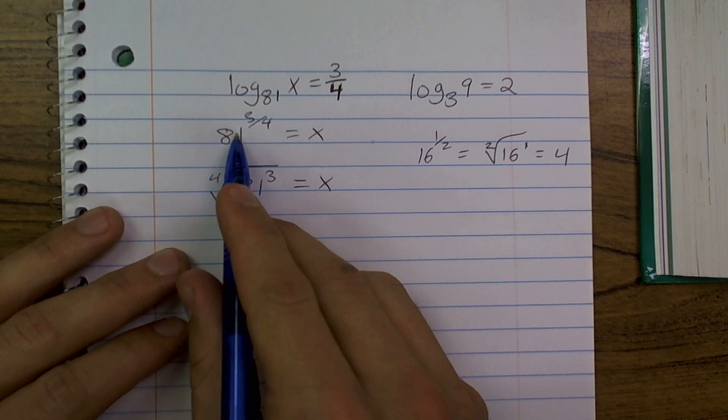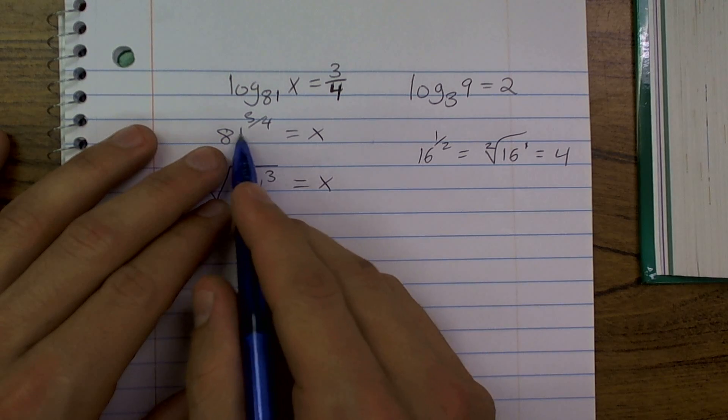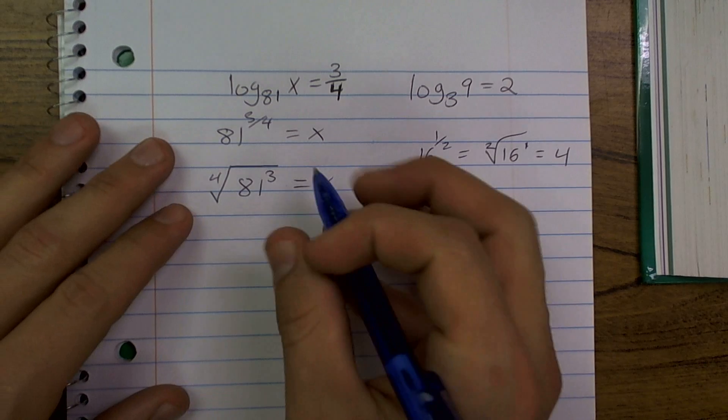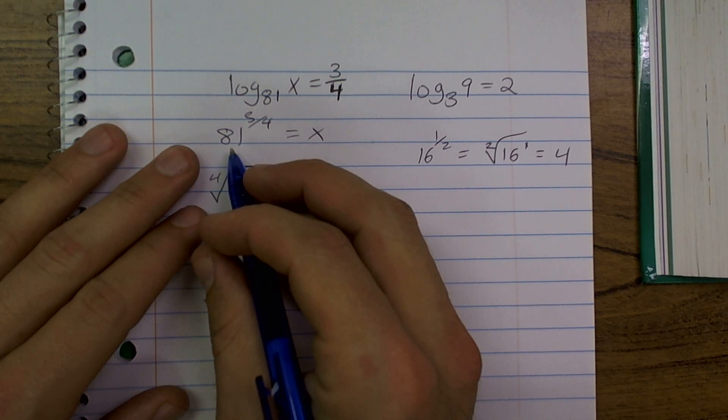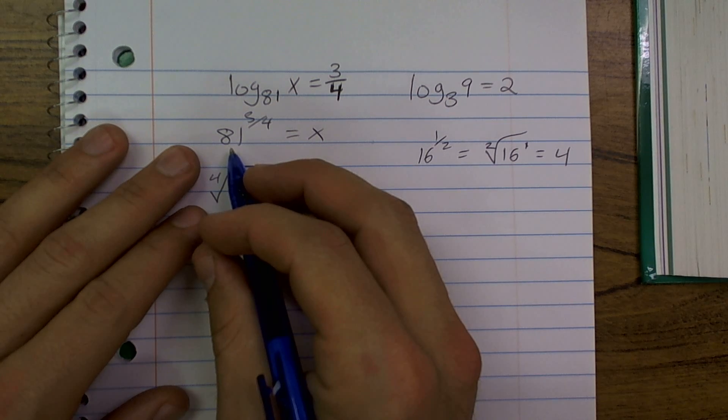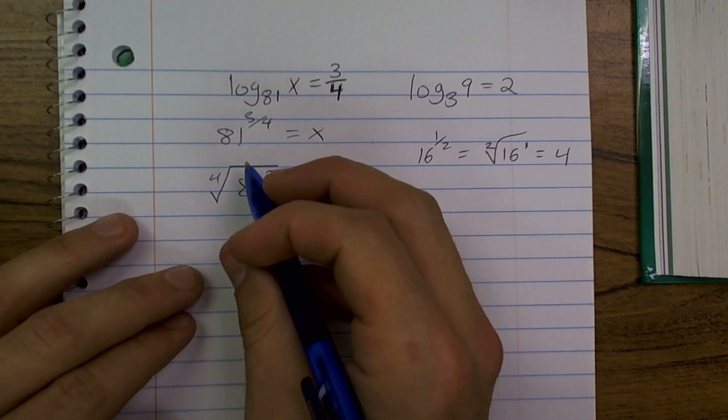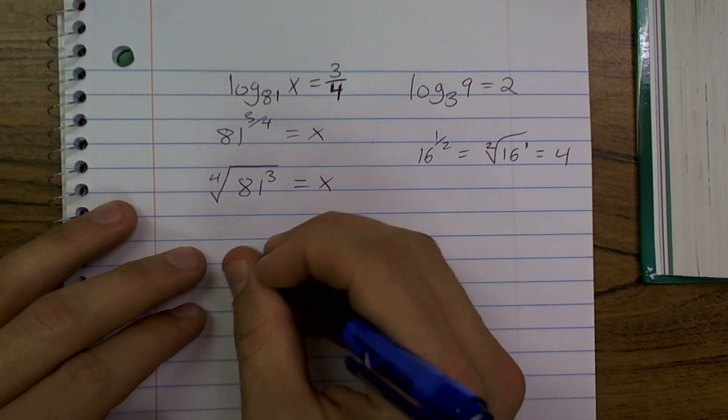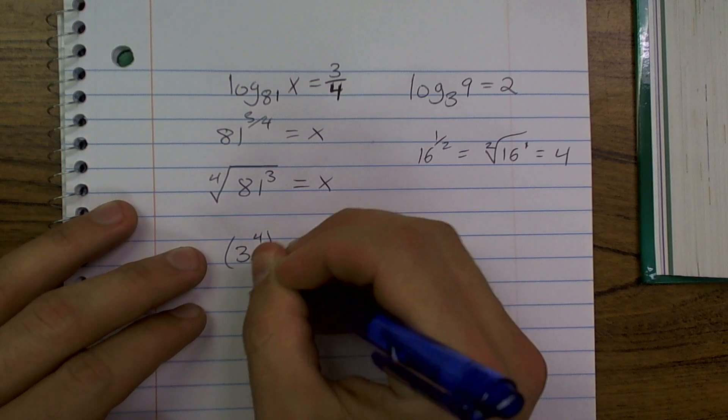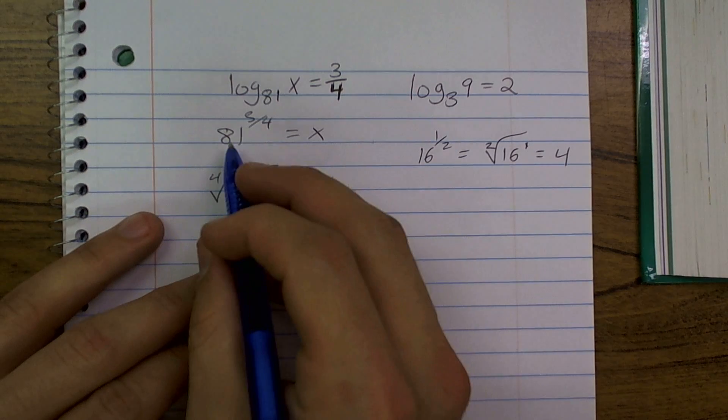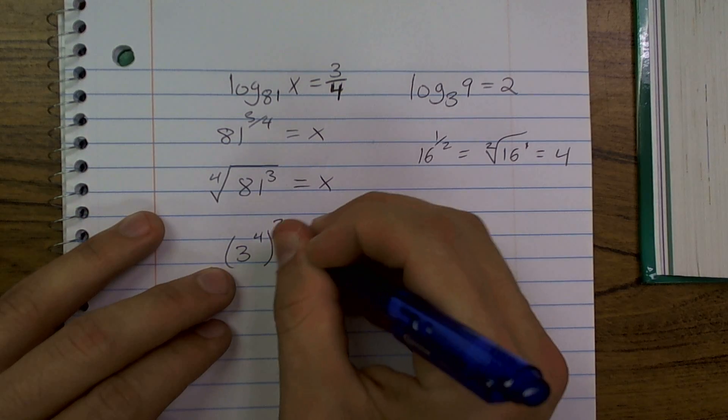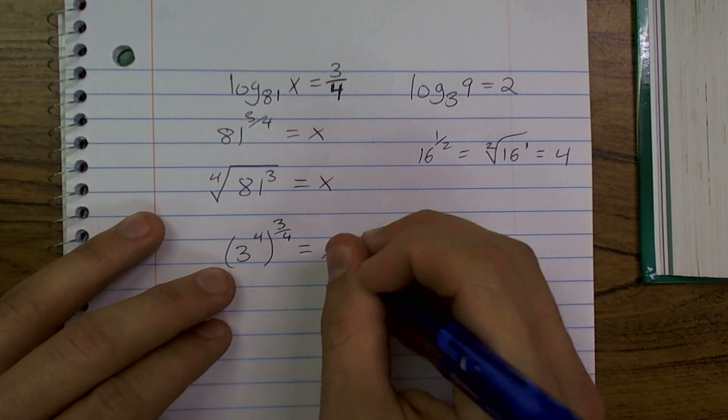What we could do is see what other ways could I rewrite 81. I can rewrite 81 as 3 to the fourth power. So 3 to the fourth power is equal to 81, and that's going to be times my 3 fourths, which equals x.